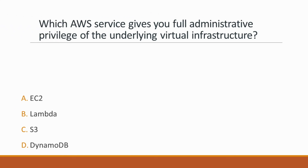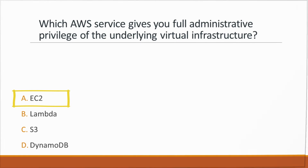Next question: Which AWS service gives you full administrative privilege of the underlying virtual infrastructure? Options: A. EC2, B. Lambda, C. S3, D. DynamoDB. Correct answer is option A, EC2, because you have control over the EC2 underlying virtual infrastructure. All other services are managed by AWS as serverless components.